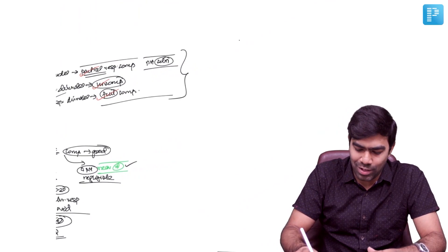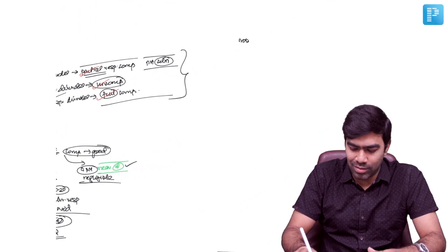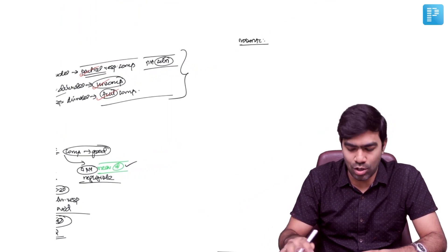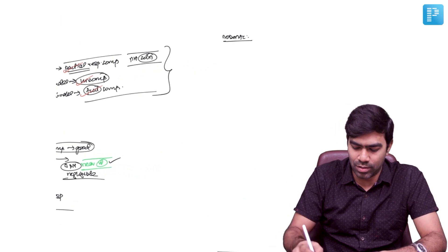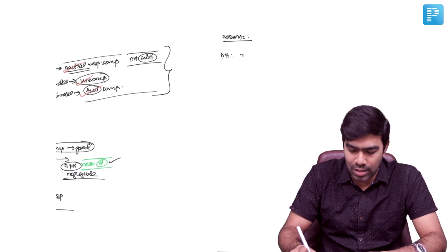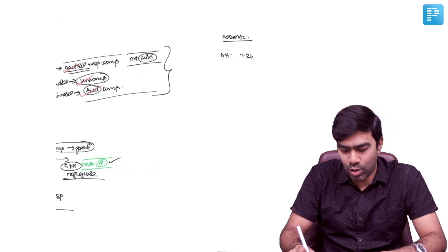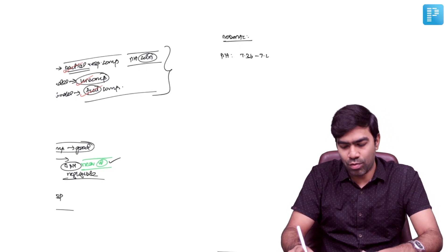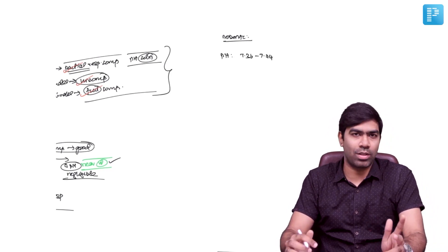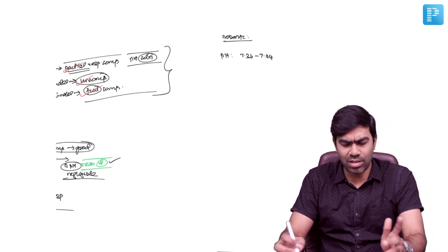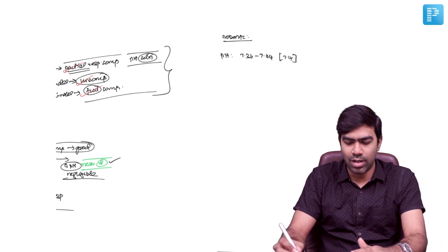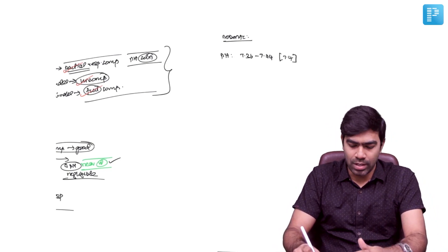When you study the ABG, you need to know what is normal and what is not normal. Some values are very important in ABG. First, pH. I would say 7.36 to 7.44 will be the normal pH. Even though some textbooks give 7.35 to 7.44, it doesn't matter. 7.36 to 7.44 is what I believe to be normal. Average, you can take it as 7.4.